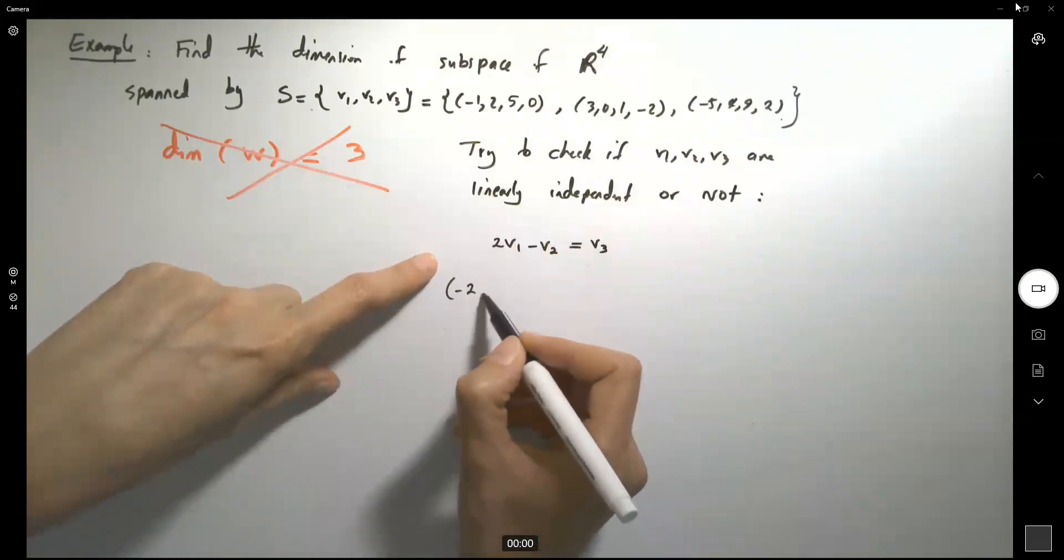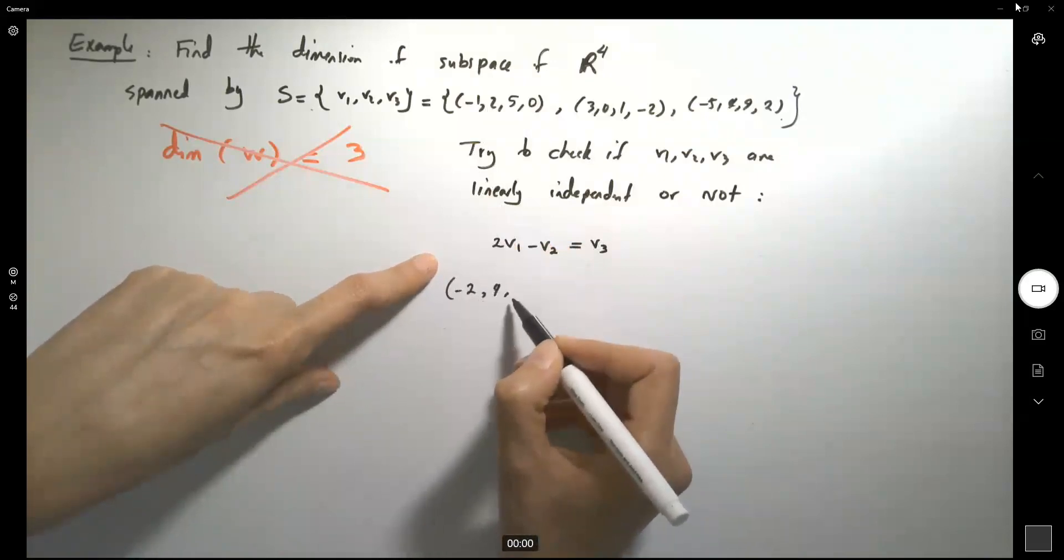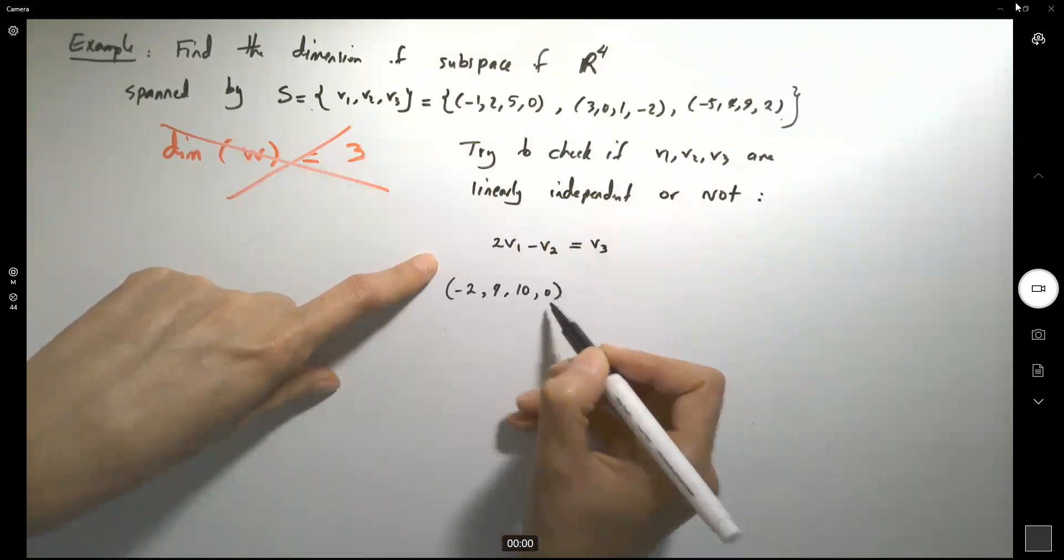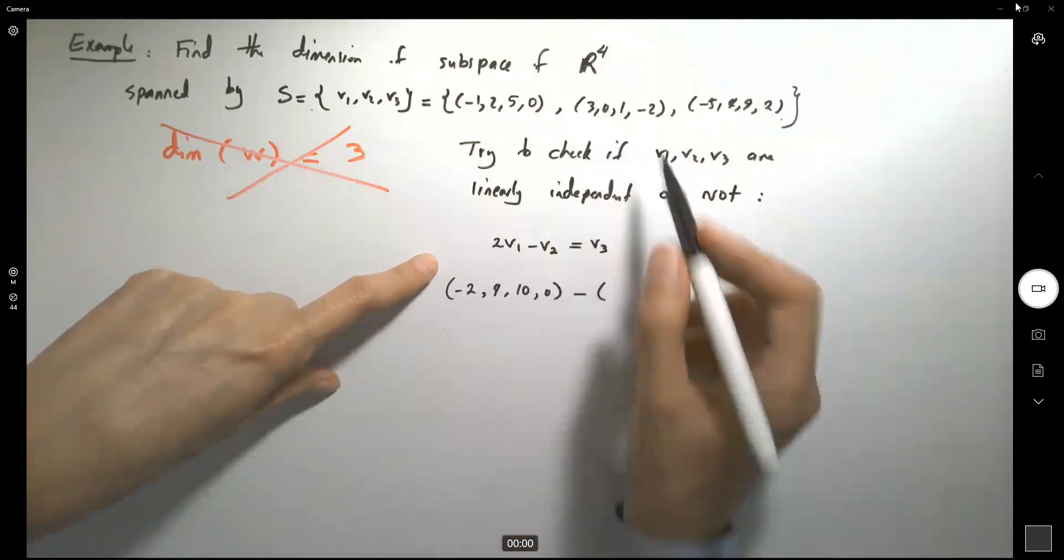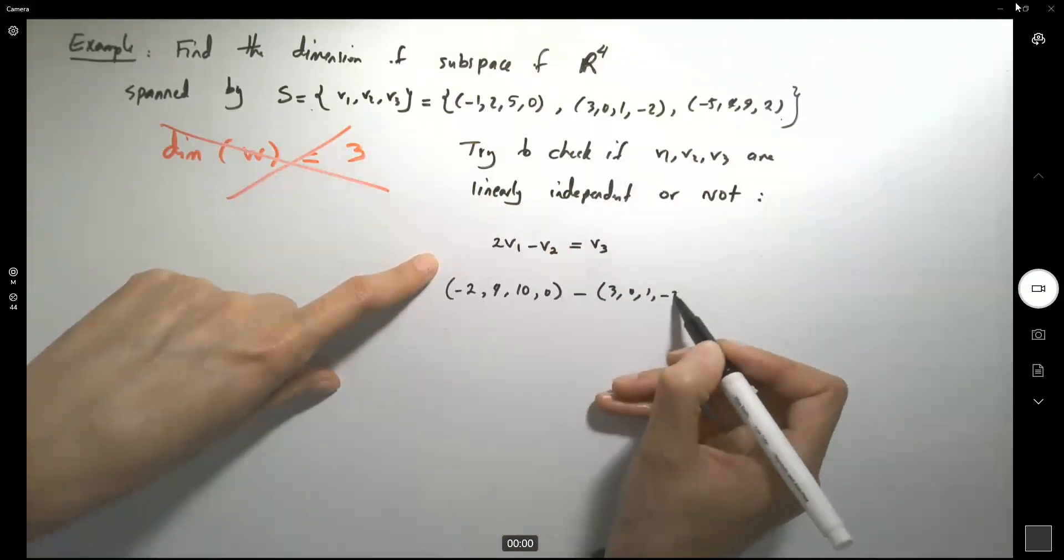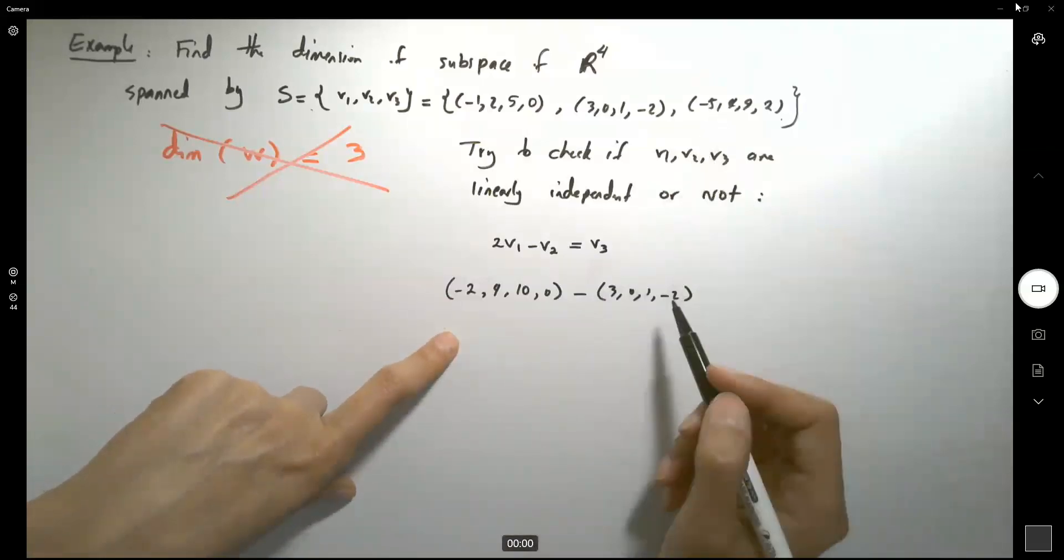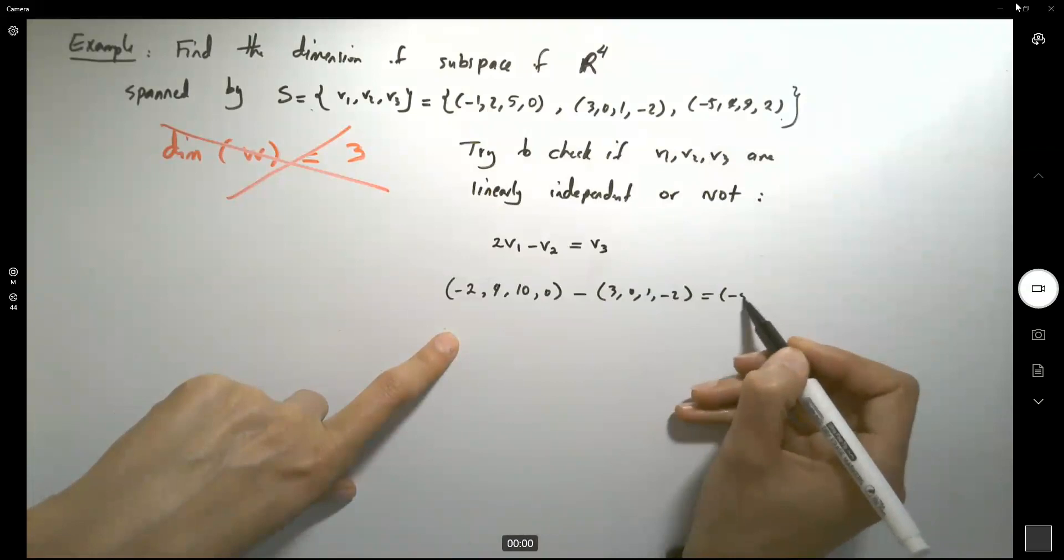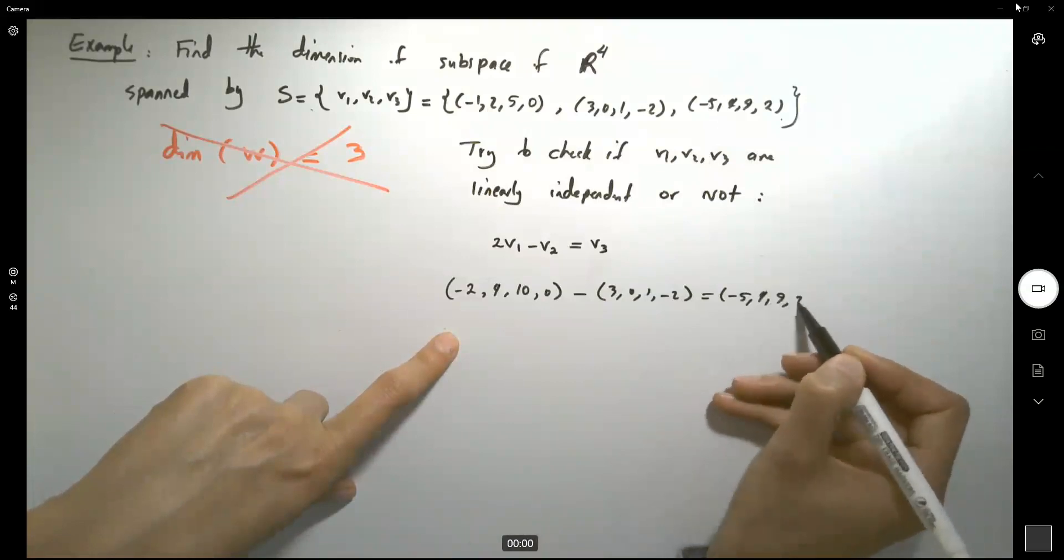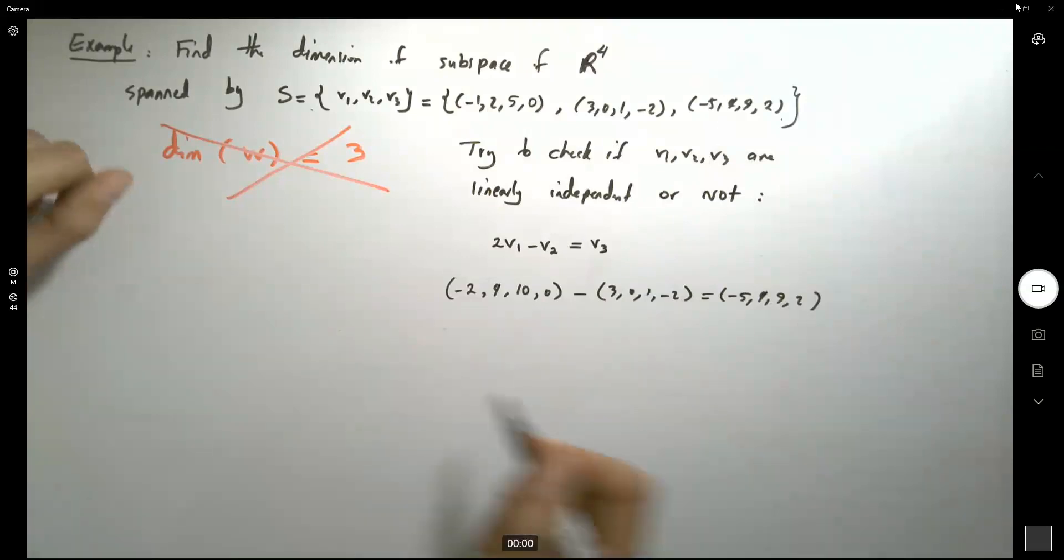2 times negative 1, 2 times 2, 2 times 5, and 2 times 0, minus 3, 0, 1, and negative 2. Just basic algebra, it gives you negative 5, 4, 9, and 2. So what's the meaning of that?